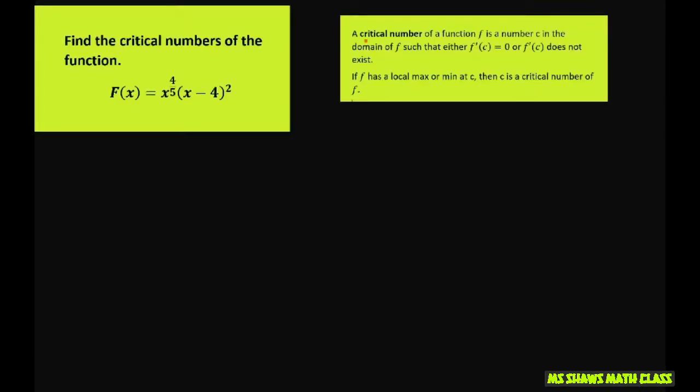We're using this definition of a critical number of function f. It is the number c in the domain of f such that f prime of c equals zero or f prime of c does not exist. In this problem, we're going to have both of these scenarios happen.